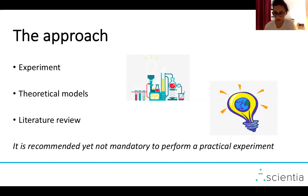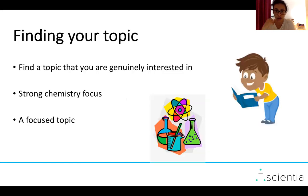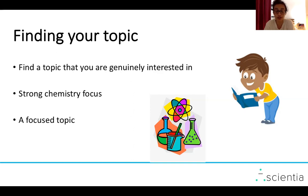The next very important thing about an extended essay is finding a good topic, and I always tell my students: choose something that genuinely interests you. You will be spending a whole lot of time on your extended essay — something like 50 hours, which is what the IBO recommends. So you might as well spend those hours on something you're genuinely interested in.